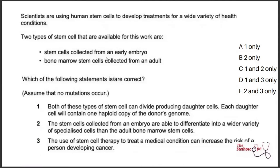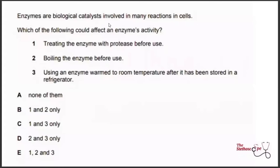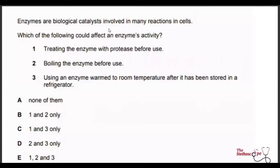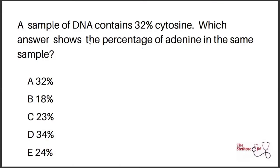Next question: which of the following could affect enzyme activity? Statement one — treating the enzyme with protease before use. Enzymes are made of amino acid chains, so protease would break bonds between amino acids, altering the enzyme's shape and causing loss of function — true. Statement two — boiling the enzyme before use would denature it, changing the active site shape so it can no longer bind its substrate — true. Statement three — warming the enzyme after refrigeration would restore its activity — incorrect, as enzyme activity does return to normal. So the answer is option B: statements one and two only.